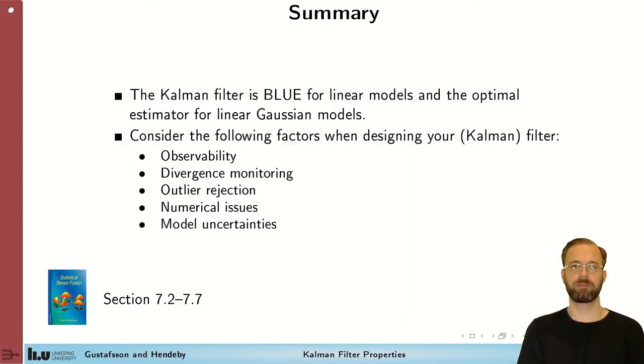To summarize, the Kalman filter is the best linear unbiased estimator for linear models, and it's actually the optimal estimator for linear Gaussian models. It analytically solves the Bayesian filtering recursion. When using a Kalman filter, or any filter for that matter, you should consider observability so that the problem is actually solvable. You should monitor for divergence so that you can make sure that the filter does what it's supposed to. Look for outliers so you can reject them before they push the filter into a divergence mode. Watch out for numerical issues and pay attention to the sensitivity to the parameters that you might have identified for the model.